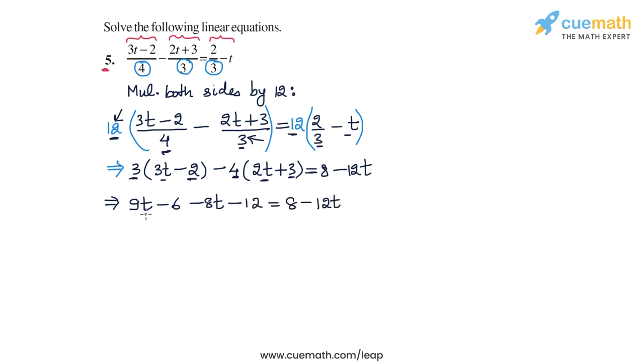Now on the LHS, we have 9t minus 8t, that is equal to t, and we also have minus 6 minus 12, that is equal to minus 18, and on the RHS, we have 8 minus 12t. So this is the equation that we have.